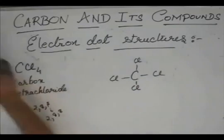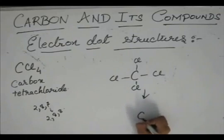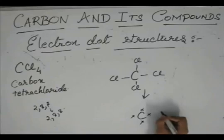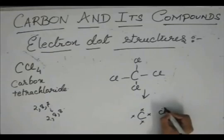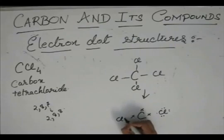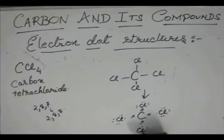So, the structure for CCL4 is this. And the electron dot structure will be: CL has 7 electrons — 1, 2, 3, 4, 5, 6, 7. This CL has 7 electrons. This CL has 7 electrons.